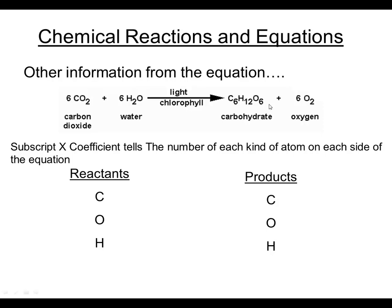On the product side, the only carbon is in the carbohydrate. There are six atoms of carbon in each carbohydrate molecule—that's the formula for glucose—and there's only one molecule. So there are six carbons on both sides: six carbons in the reactants and six carbons in the products.